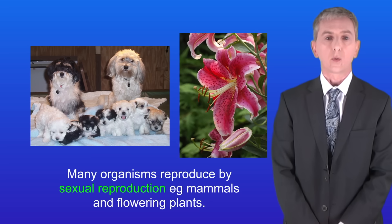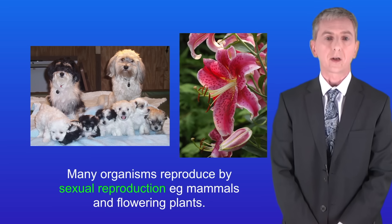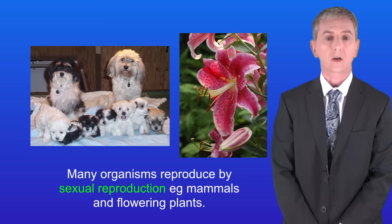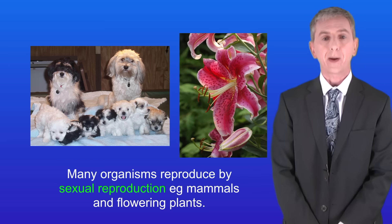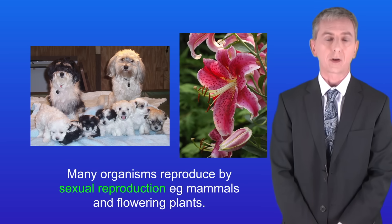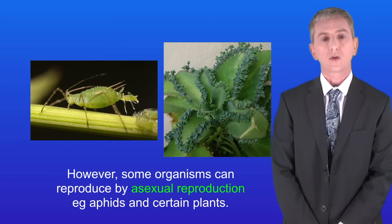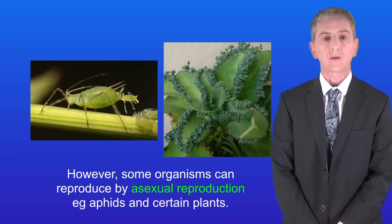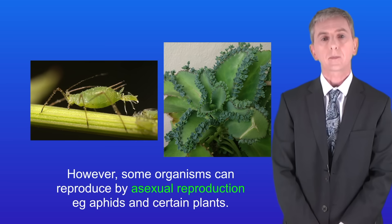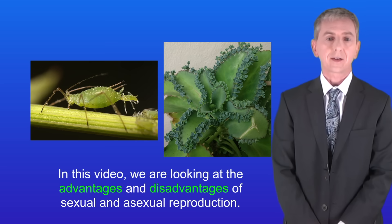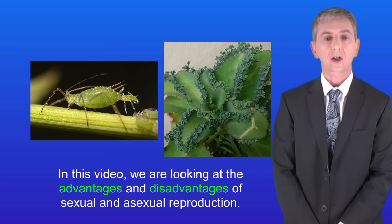In a previous video we saw that many organisms reproduce by sexual reproduction, for example mammals and flowering plants. However some organisms can reproduce by asexual reproduction, for example aphids and certain plants. So in this video we're looking at the advantages and disadvantages of sexual and asexual reproduction.